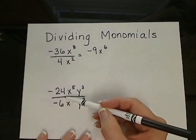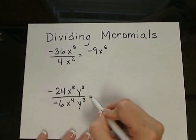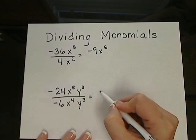In this example, negative 24 divided by negative 6. Go ahead and divide those to give me a positive 4.